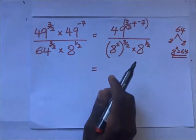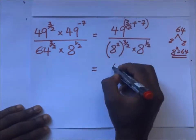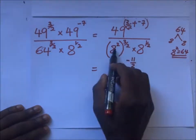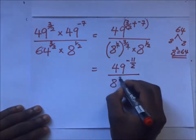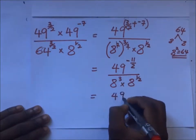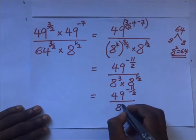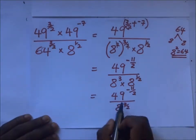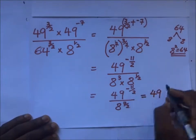So for the 49 expression, 3 over 2 plus negative 7 is the same as 3 over 2 minus 7, which gives us 49 to the power negative 11 over 2. For the 8 expression, the squared times 3 over 2 gives power 3, then you add the half: 3 plus a half gives 7 over 2. And 49 to the power negative 11 over 2 is the same as 49 to the power half, all to the power negative 11.